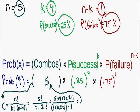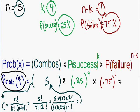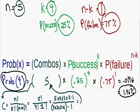Going back to our original problem, the probability that a student got exactly four questions correct is equal to five multiplied by 0.25 to the power of four, all multiplied by 0.75 to the power of one. Plugging that into your calculator, we get an answer rounded to four decimal places of 0.0146, or 1.46%. So the probability that a student got exactly four questions correct is 1.46%.